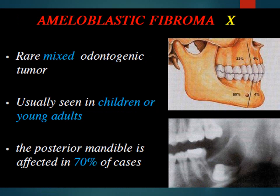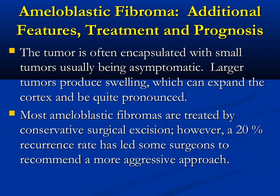Ameloblastic fibroma is a rare mixed odontogenic tumor usually seen in children or young adults, with the posterior mandible affected in 70% of cases. The tumor is often encapsulated; small tumors are usually asymptomatic while larger tumors produce swelling and cortical expansion. Most are treated by conservative surgical enucleation; however, a 20% recurrence rate has led some surgeons to recommend a more aggressive approach.